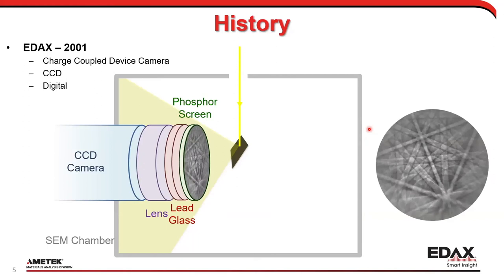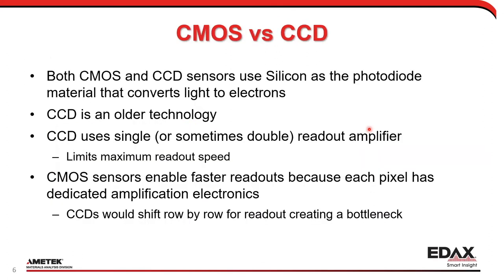In 2001 we switched over to a CCD camera — a charge-coupled device. These were digital, which was better than analog cameras, but essentially the same concept: the phosphor screen turns backscattered electrons into light, and you take a picture of it. CCD cameras were the main cameras used for a very long time. They use silicon as a photodiode and are less noisy — good technology at the time.